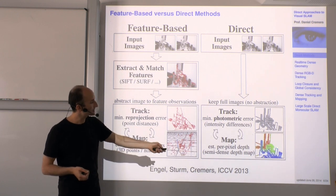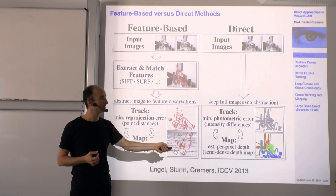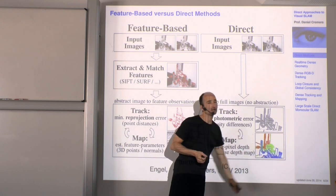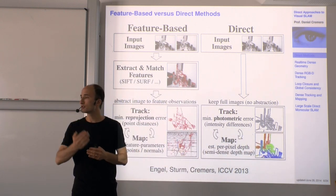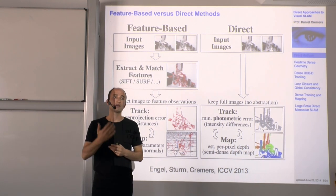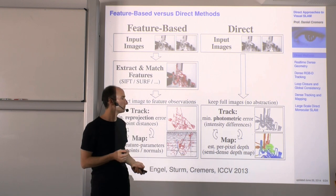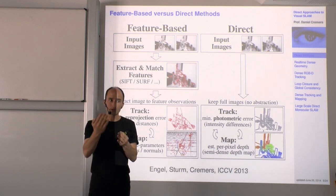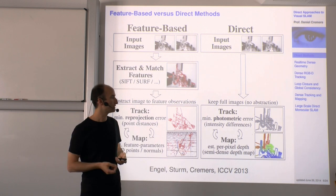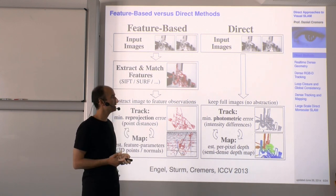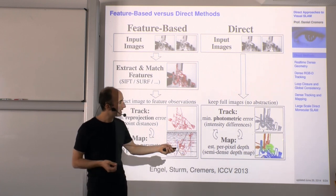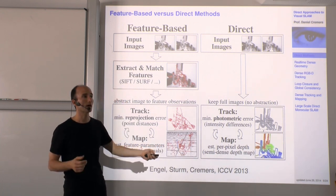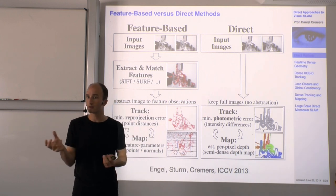A question raised last time: what is semi-dense, and where do you not get 3D information? In this particular approach, you don't get 3D information in locations that have constant brightness, where the color does not change. If everything is white — like white walls in man-made environments — there is actually no way to get geometry from the images, because if the color doesn't change, it's hard to associate any notion of correspondence.